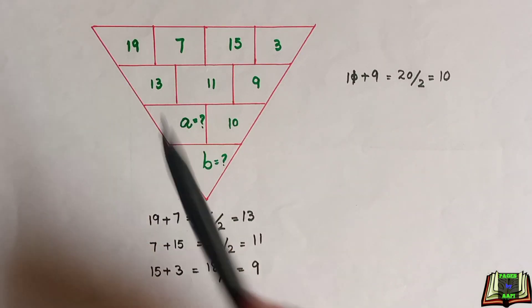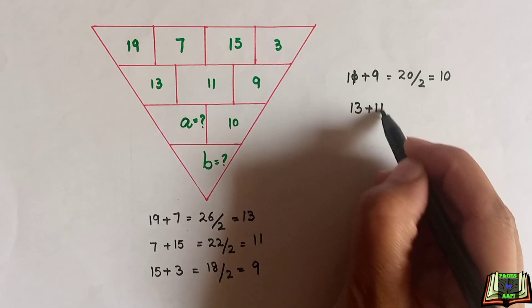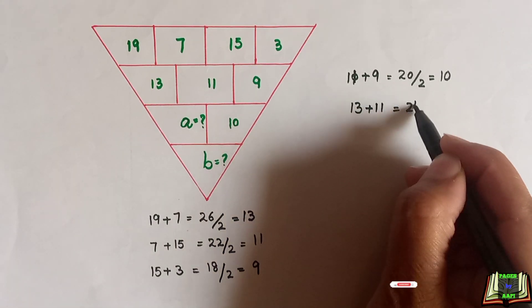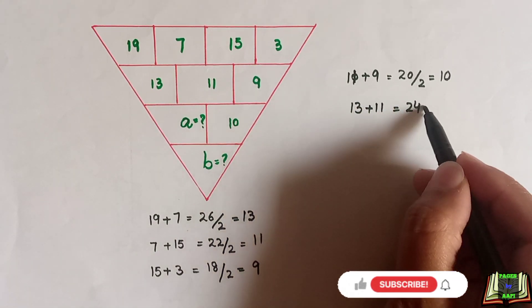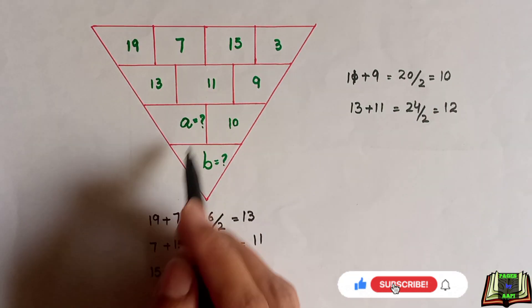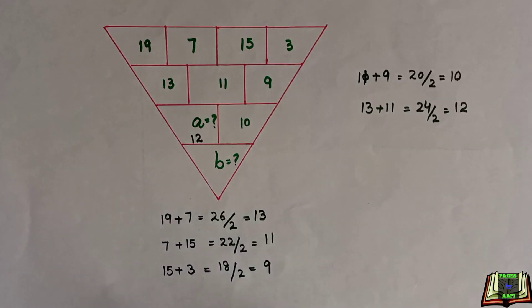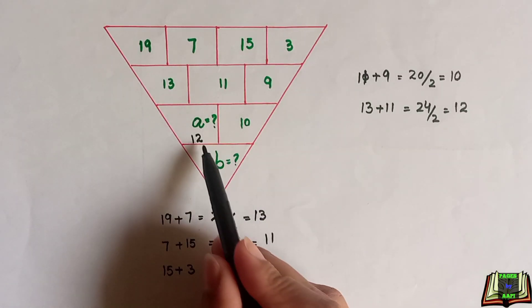By adding these two numbers, 13 and 11, we will find the value of a. First, we get 24, and then we divide it by 2. We got 12. So by following the same pattern, we got the value of a, which is equal to 12.